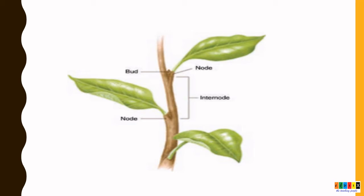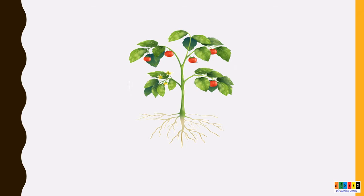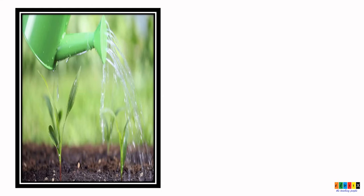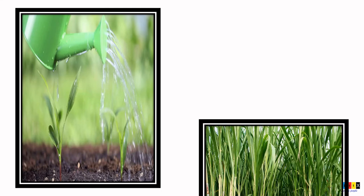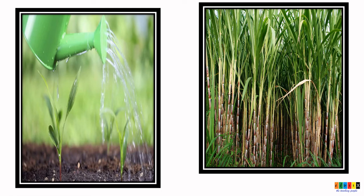You can easily learn through this diagram. What does the stem do? The stem supports the branches, leaves, flowers, and fruits. It can transport water and minerals from roots to the upper part of the plant. It transports the prepared food from the leaf to the other parts of the plant. It can also store food, as in the case of sugarcane. So these are the growing structure of stem and its functions.